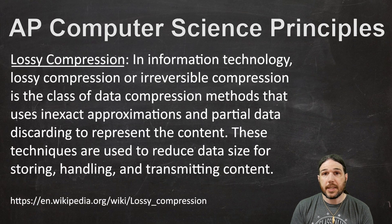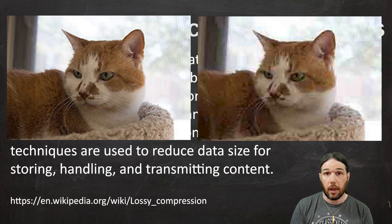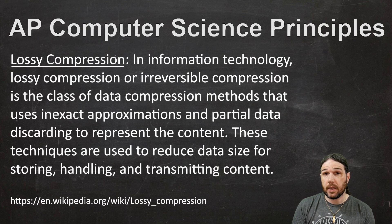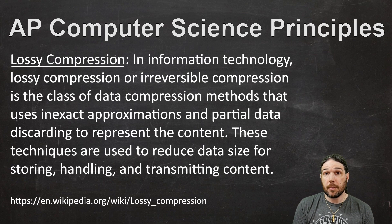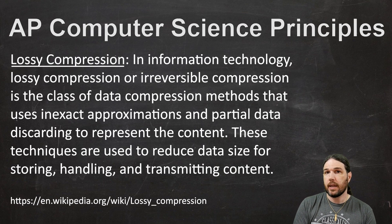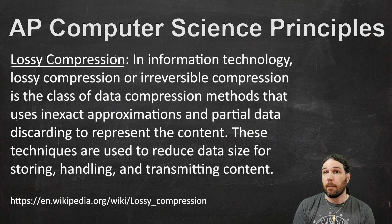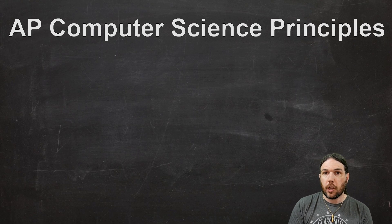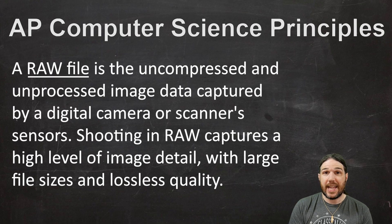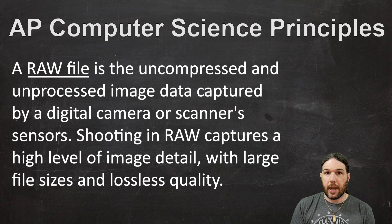We're going to start with lossy compression. Lossy compression is when you give up some detail of whatever it is you're making in order to make the file size smaller. The loss of detail is permanent and cannot be reconstructed by some other computer using this file. Which is why photographers often save their pictures as very large files called raw files — this maintains absolutely as much detail as possible, and then the photographer can decide later in editing how much compression is necessary.